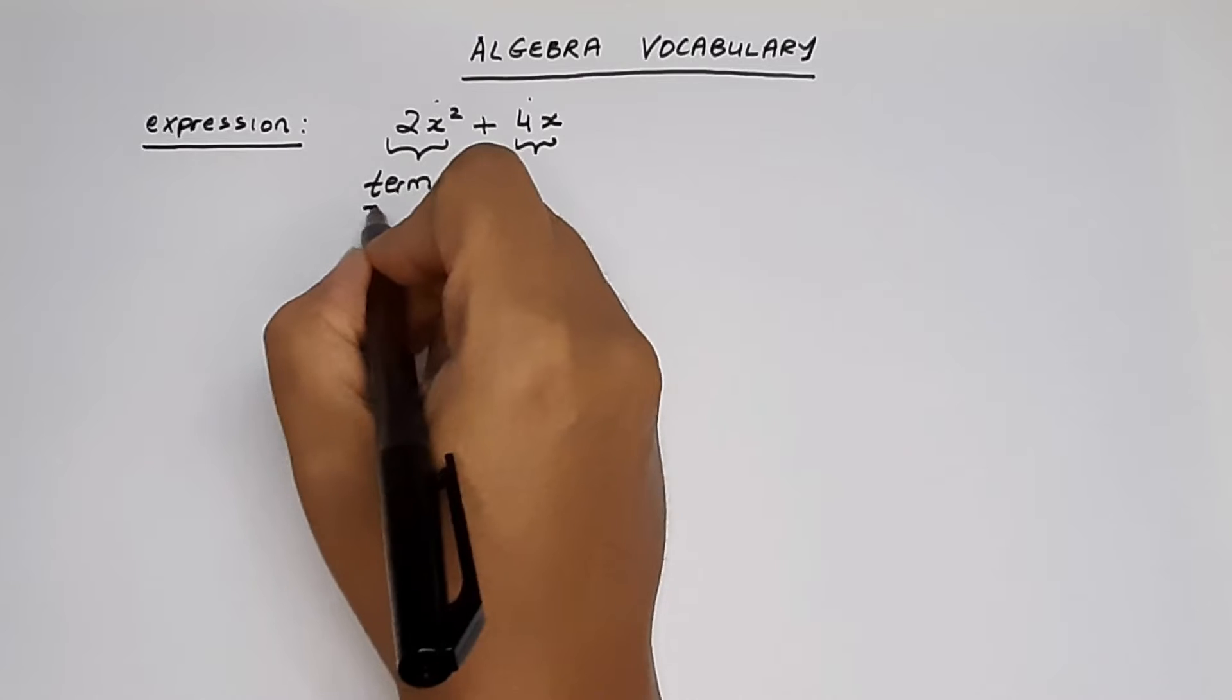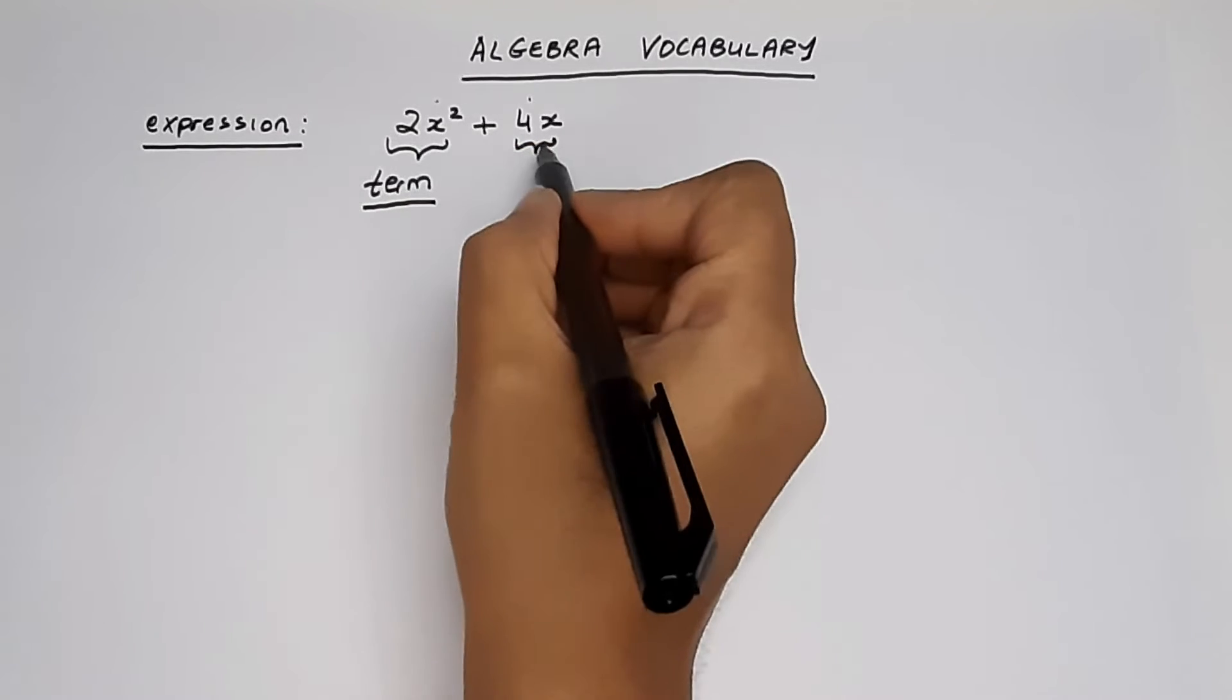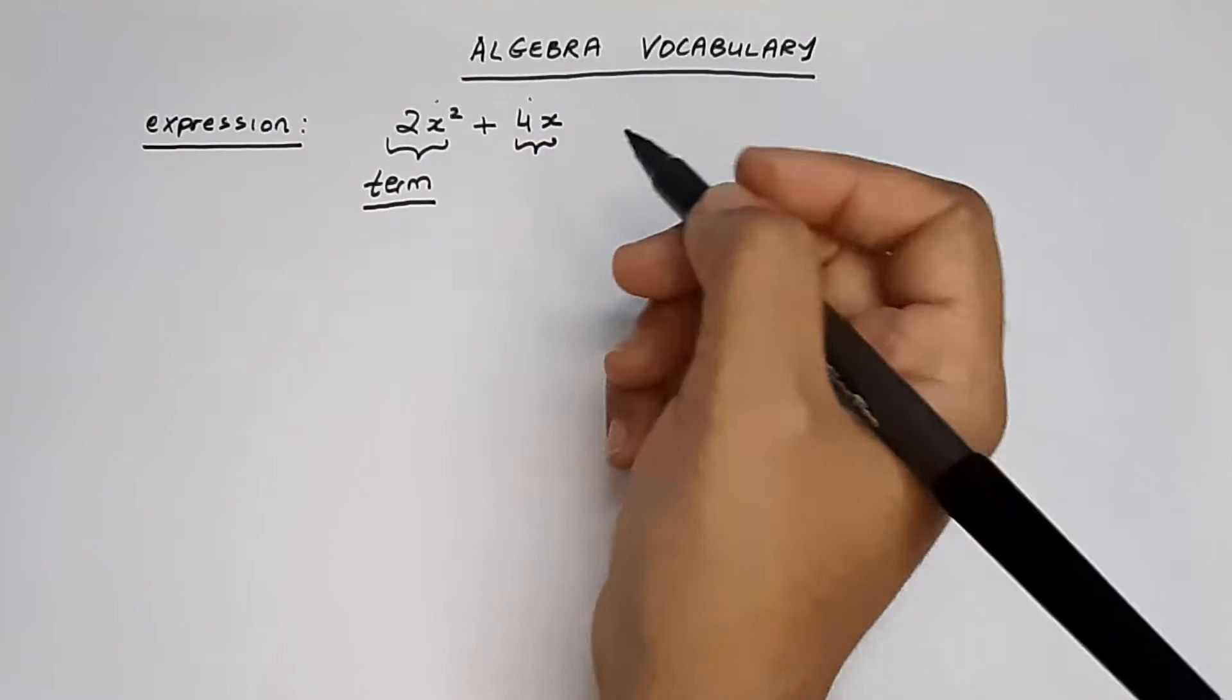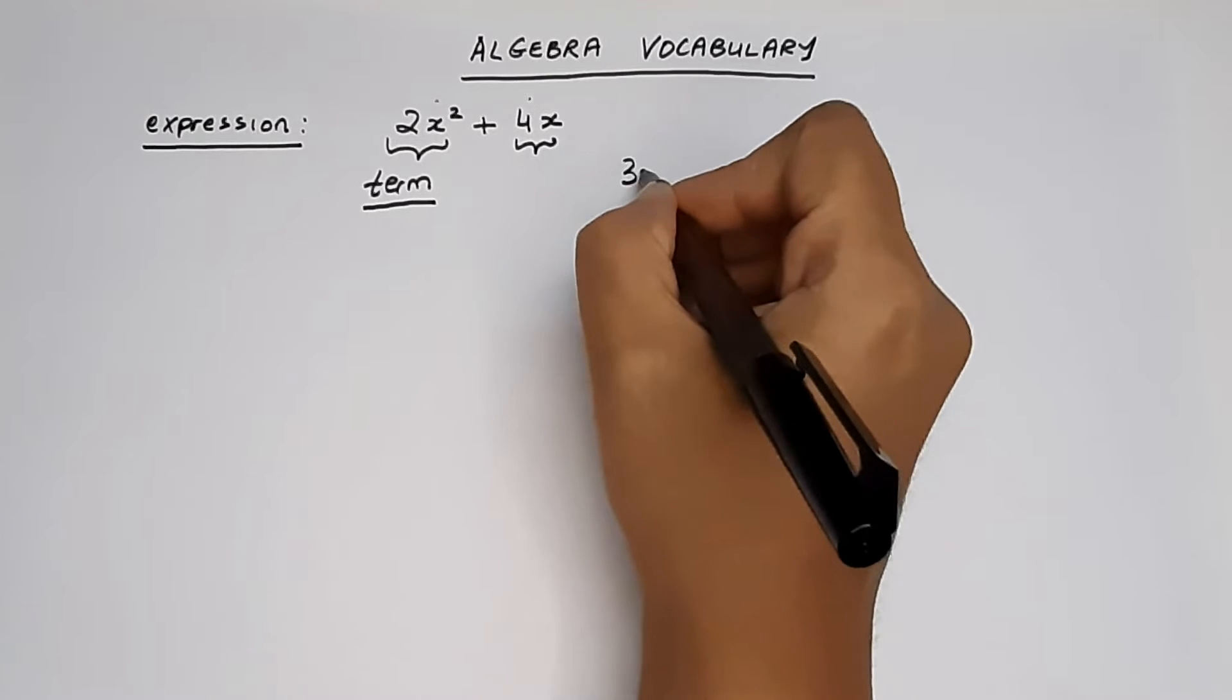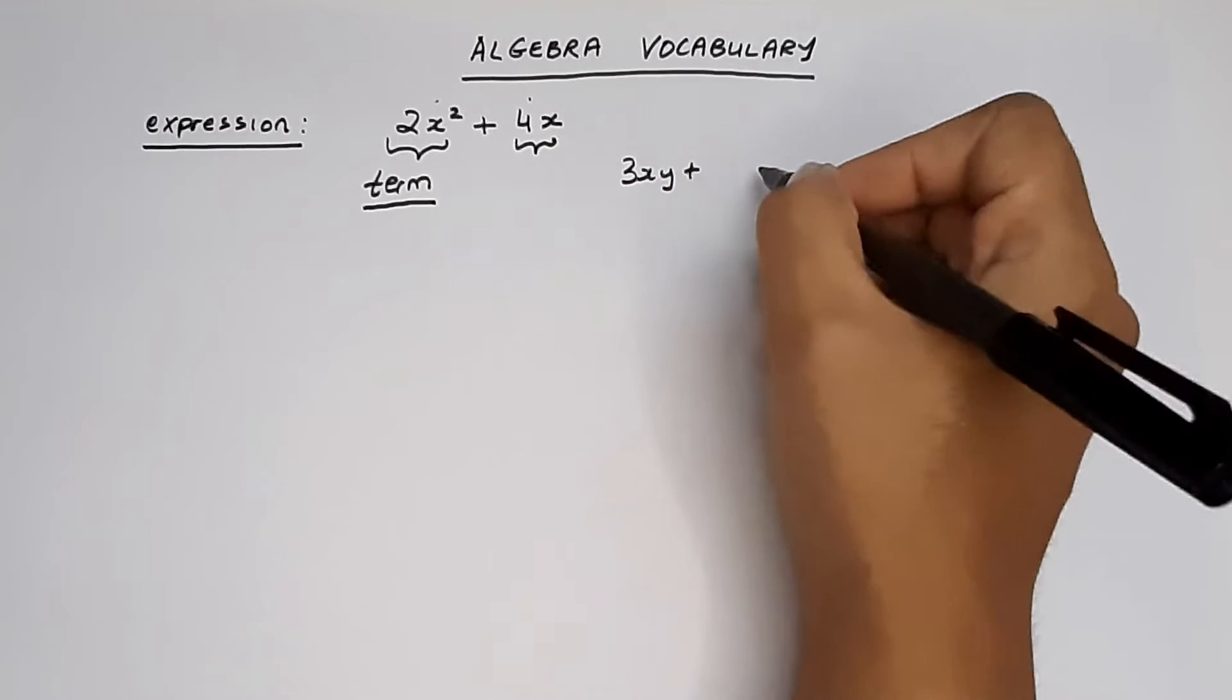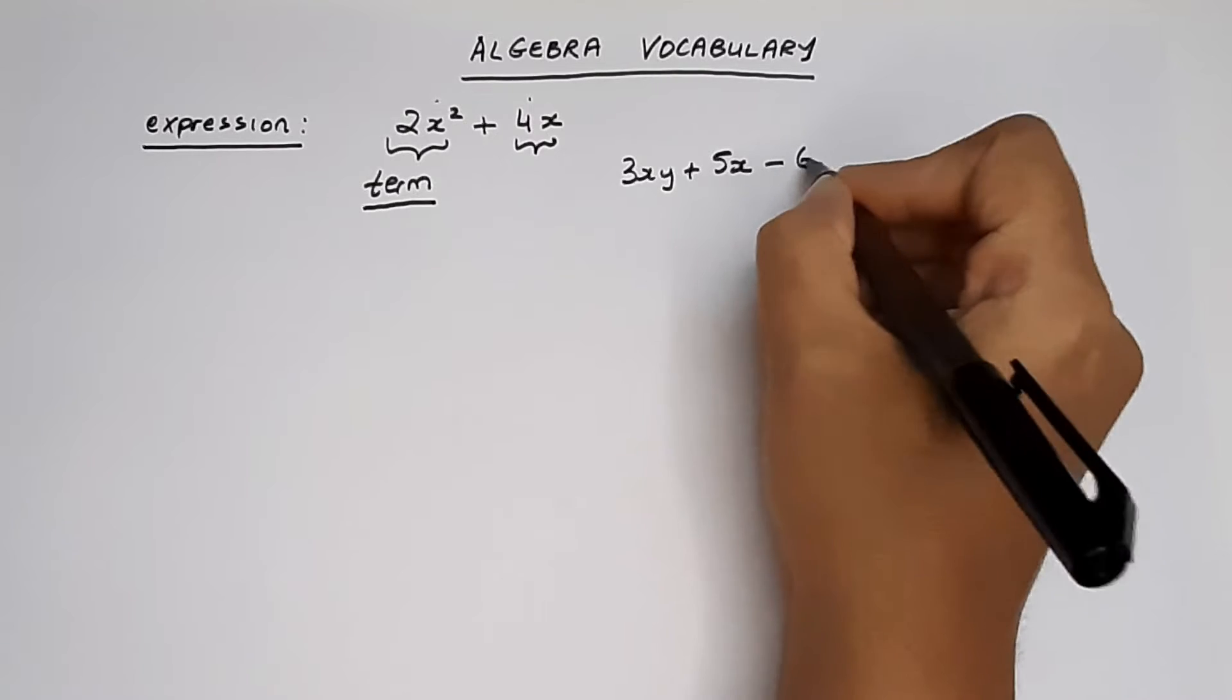Basically another vocabulary word is term. These are called terms. And let's take another example: 3xy plus 5x minus 6.